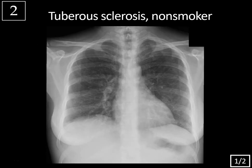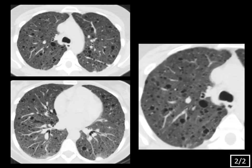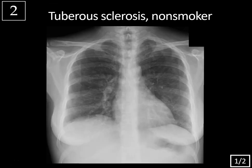Case 2: this is a chest X-ray of a patient with tuberous sclerosis who's a non-smoker. This chest X-ray is very subtle, but there is fine reticulation throughout the lungs, and that's due to the small cysts that we see subsequently on the CT chest. You can see one of these cysts faintly outlined in the right mid-lung.